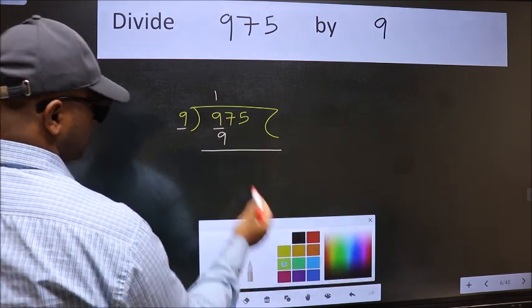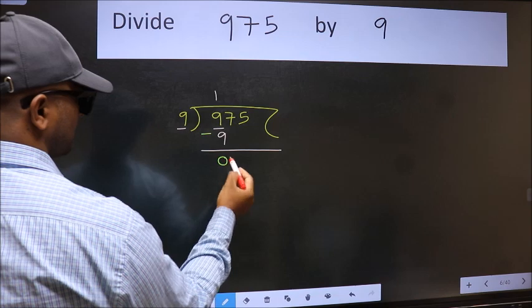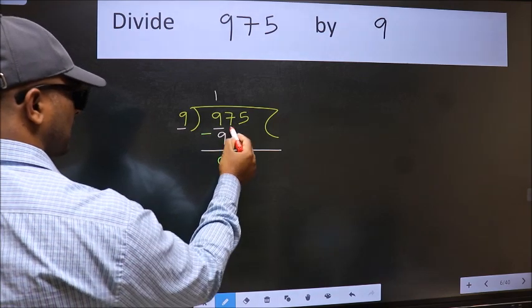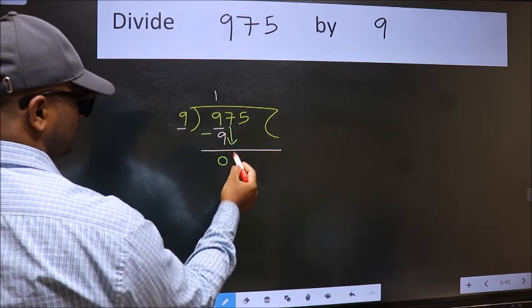Now we should subtract. We get 0. After this, bring down the beside number. So 7 down.